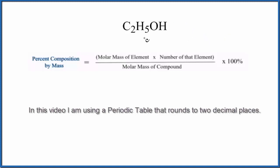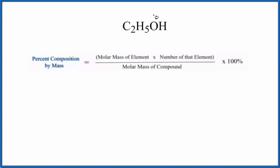So to find the percent composition by mass of each element here in C2H5OH, the ethanol molecule, the first thing we'll do, we'll look at our equation here, and we need to find the molar mass for the entire compound.